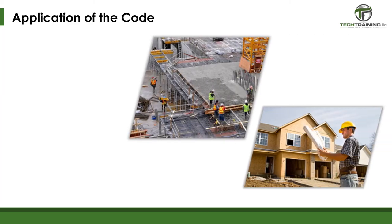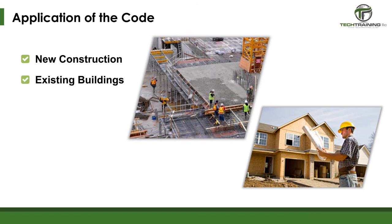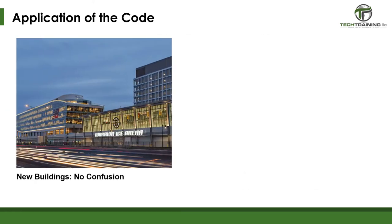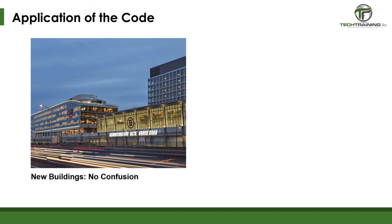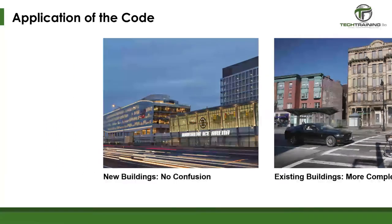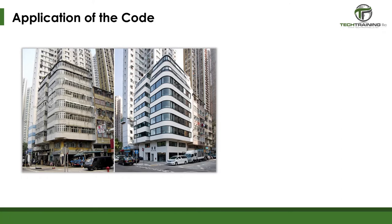We all know that building codes will apply to new homes and buildings, but they also apply when an existing home or building is remodeled, added to, or renovated. Each of these situations requires that a building permit is obtained. Once a permit is obtained, this invokes the building code. For new buildings, the entire building must be constructed to the existing code for that location and type of building. However, for existing buildings, the code can get more complicated. When an addition is constructed, the addition must be built to code, but unaffected or unchanged portions of the building are typically not affected. The same is true for renovations and alterations.